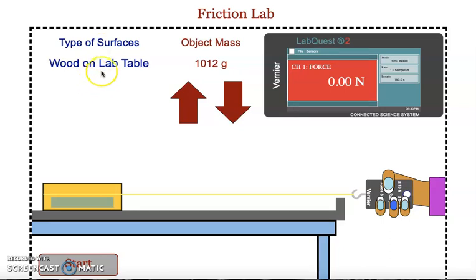Once you are on your assigned surfaces, you would then be able to set the mass of the object by clicking on the up or the down arrow to either increase or decrease the mass for each trial.